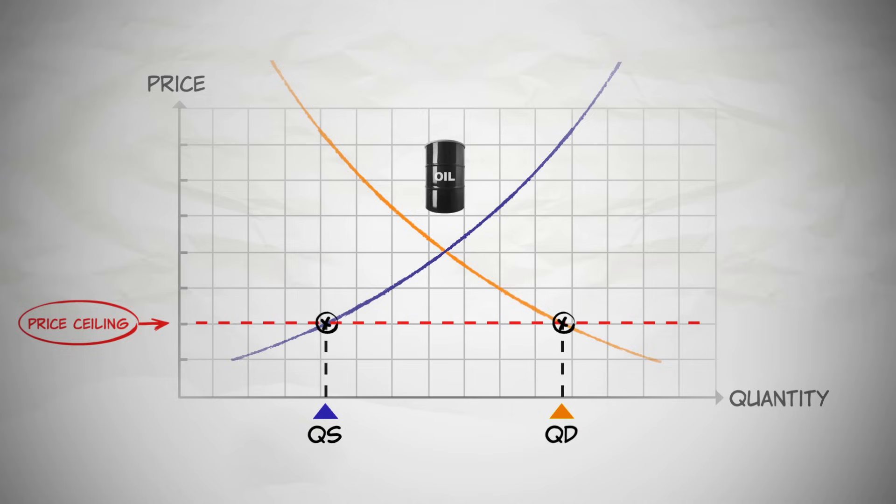With a price ceiling, buyers are unable to signal their increased demand by bidding prices up, and suppliers in turn have no incentive to increase the quantity supplied because they can't raise the price. The result is a shortage. The quantity demanded exceeds the quantity supplied.